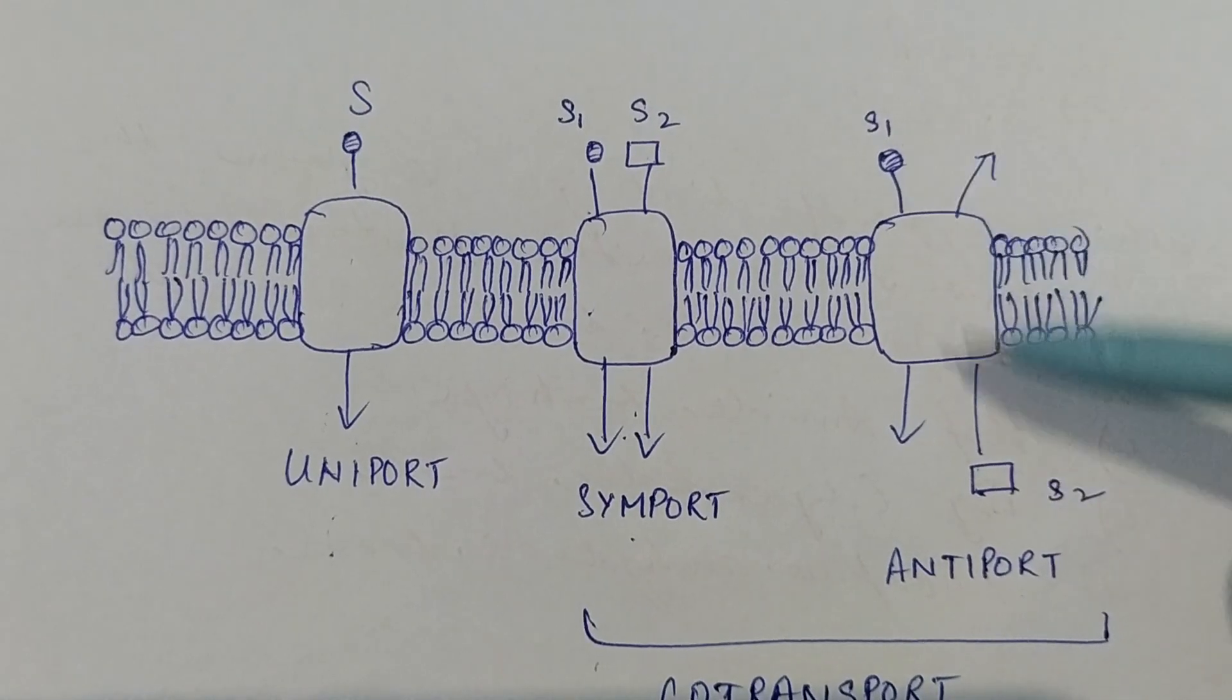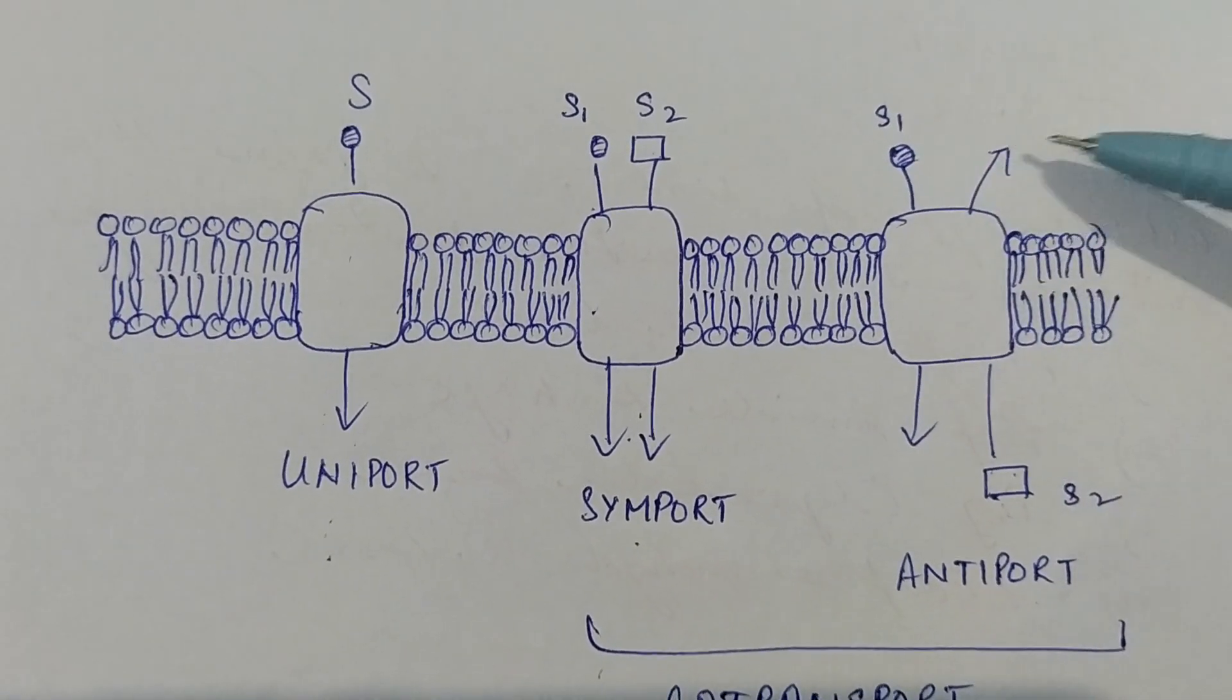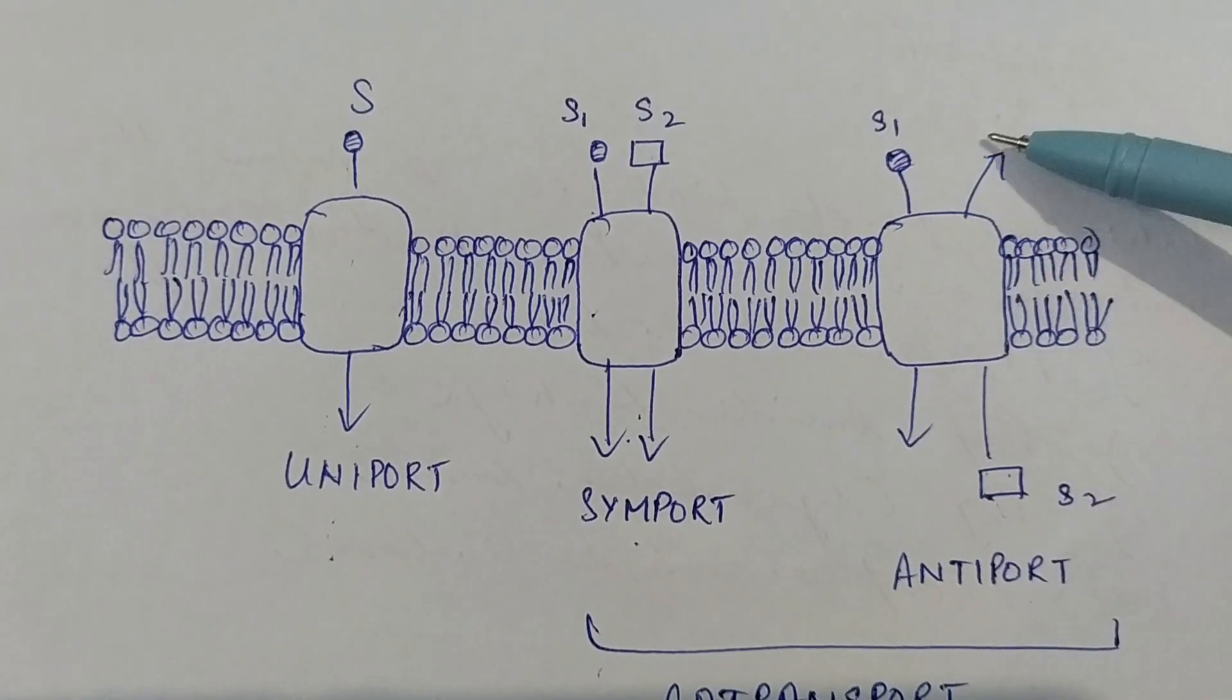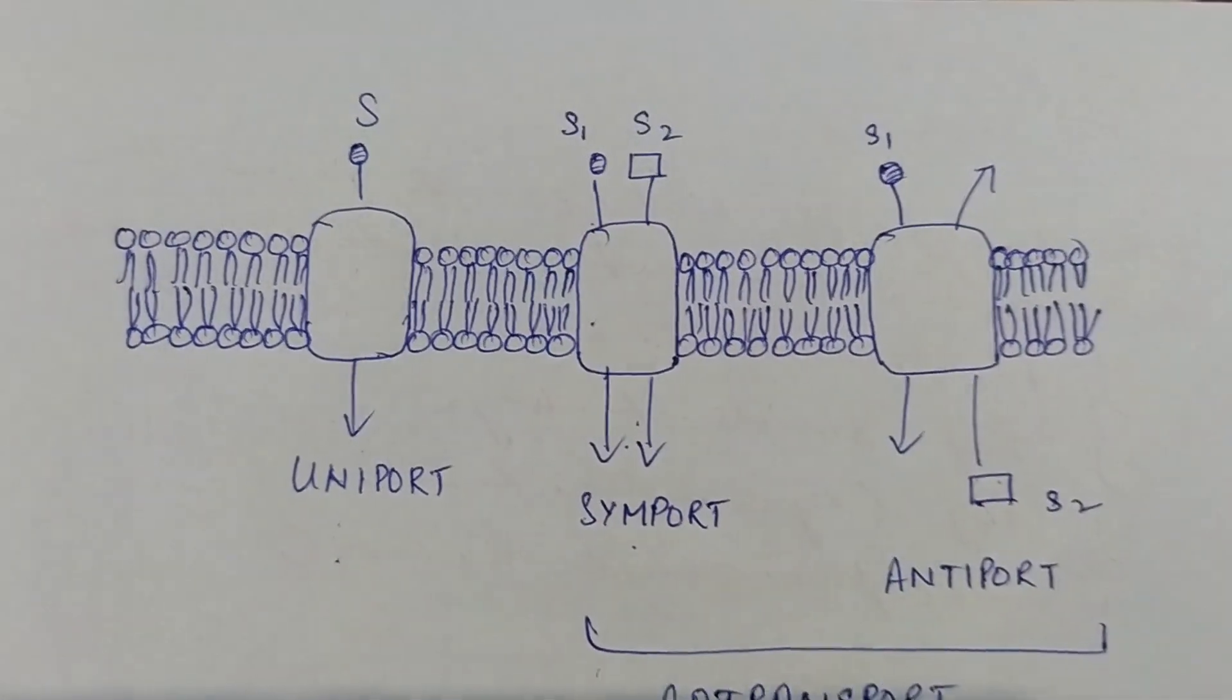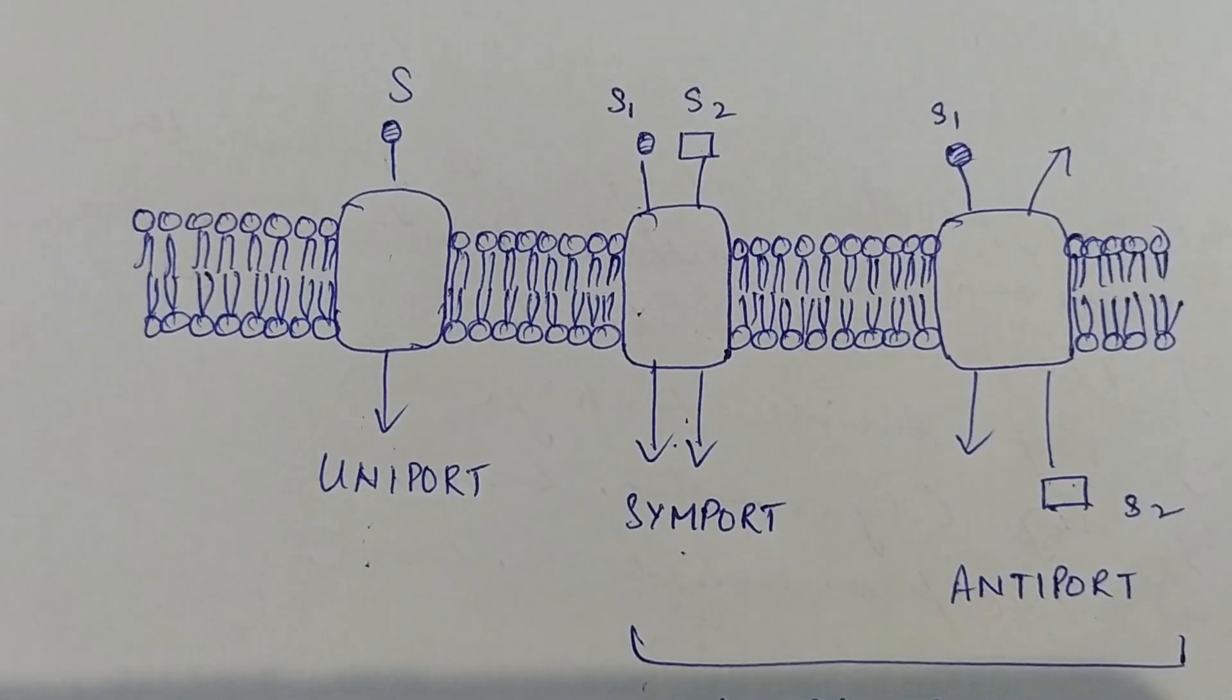If this moves in this direction, the other molecule would move in the opposite direction. So if you remember when we talked about active transport, we said that it is co-transport when we were talking about secondary active transport.